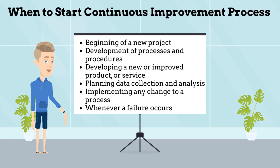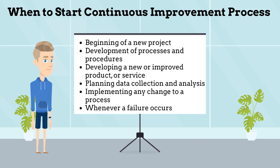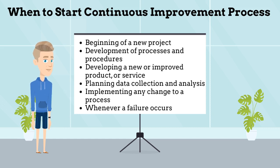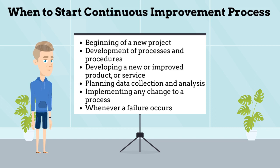There is no bad time to start using a continuous improvement process, but the sooner the better. A continuous improvement process should be implemented at the beginning of a new project, development of processes and procedures, developing a new or improved product or service, planning data collection and analysis, implementing any change to a process, and whenever a failure occurs.